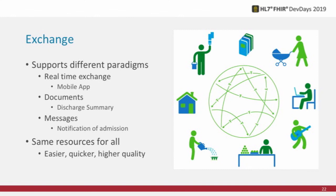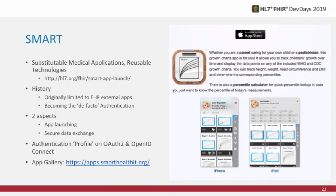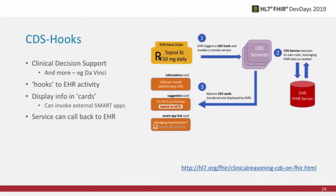FHIR has also built up a community from which a number of other standards have emerged. One is SMART. SMART has two main factors: first, the ability to create small apps that can work against anybody's system; second, because it's a profile on OAuth, it's become almost a standard way of identifying and authenticating systems into APIs. You don't need to understand the depths of it — it gets a bit geeky — but it's important to recognise it.